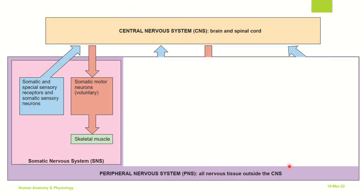Let's understand the central nervous system comprising of the brain and the spinal cord and how communication occurs between the CNS and the PNS. The somatic nervous system gives all its responses that are voluntary in nature and ultimately only go to the skeletal muscles.